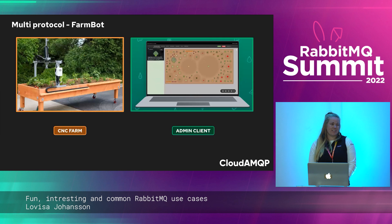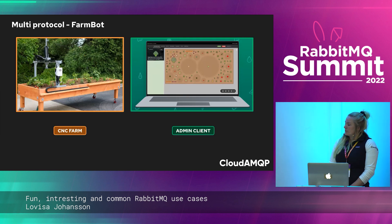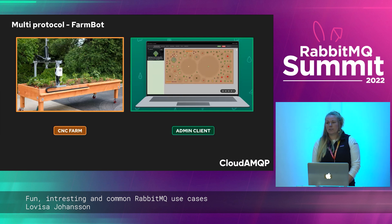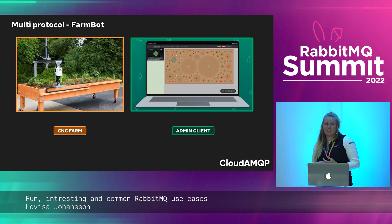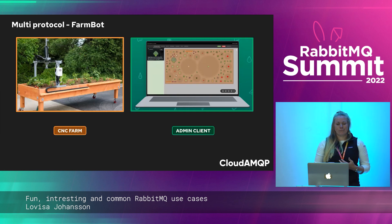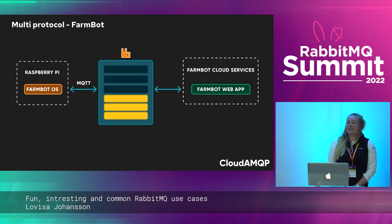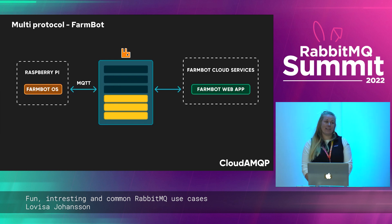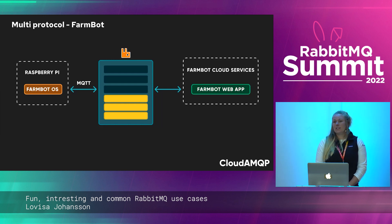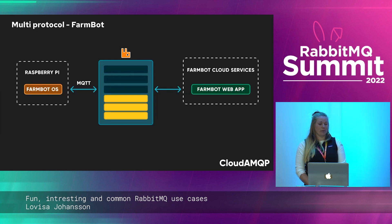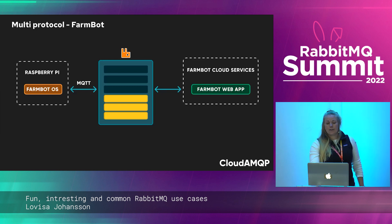RabbitMQ supports messaging over many protocols and is perfect for IoT applications. An open source robot farming app called FarmBot uses tools and apps to perform tasks such as watering plants, putting lights on for a nighttime harvest, and taking photos of vegetables. FarmBot uses physical sensors and drivers that require a bridge between the physical garden and the software layer. The message broker is used for messaging between the database, users, and devices, and RabbitMQ communicates using MQTT, among other protocols, when communicating between devices and the web browser.